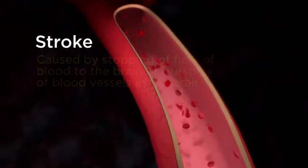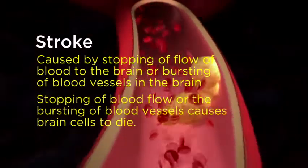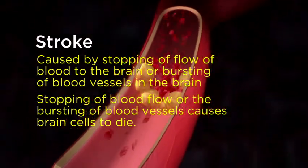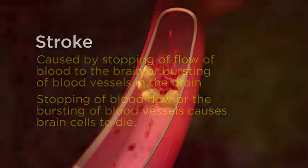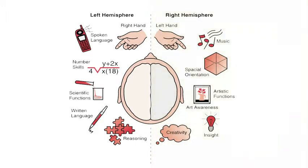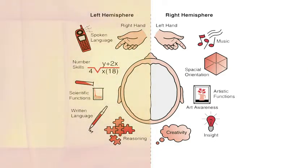What is a stroke? It is a brain attack. A stroke can affect your ability to move, see, remember, speak, reason, and read and write. Effects include trouble learning or remembering new information, vision problems, problems with short-term memory, chewing, swallowing, speaking, and balance and coordination.